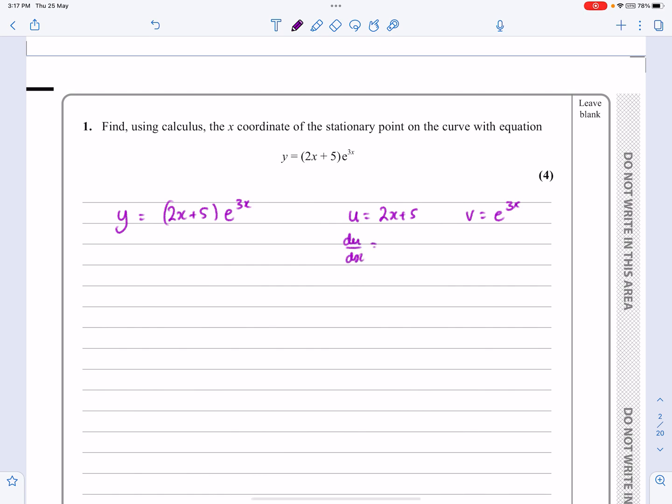du/dx, the differential of 2x is just 2. dv/dx, the differential of e^(3x) is e^(3x) times the differential of that thing there, or in other words, 3e^(3x). I would hope that's very straightforward for you.